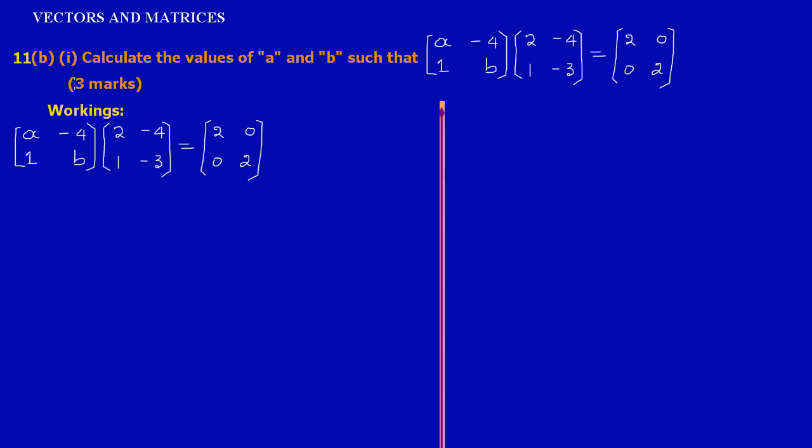Hi guys, let's just quickly look at the solution to question 11b part 1. They are asking us to calculate the values of a and b such that in our first matrix [a, -4; 1, b] is multiplying [2, -4; 1, -3] and that is equal to [2, 0; 0, 2]. We're going to be doing our work here. If you notice, I have just copied the matrix that we had up there.